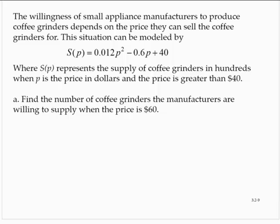Find the number of coffee grinders the manufacturers are willing to supply when the price is $60. So they would be willing to supply S of 60, which is 0.012 times 60 squared minus 0.6 times 60 plus 40.